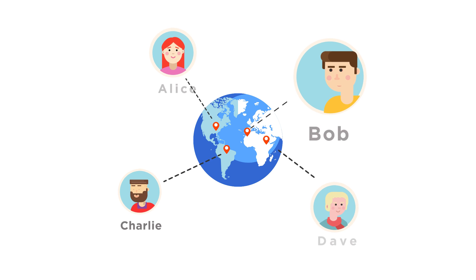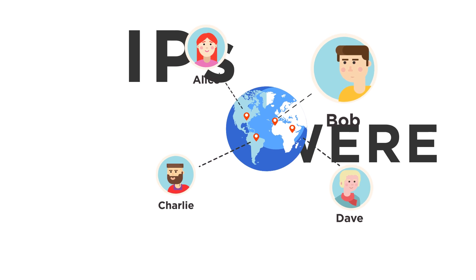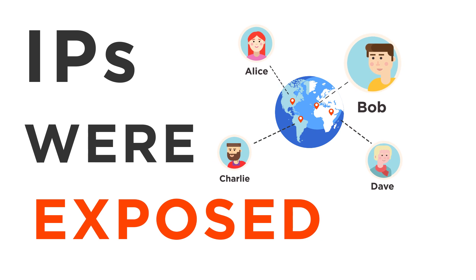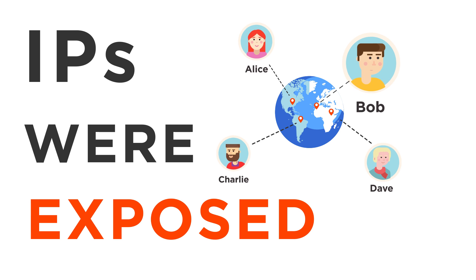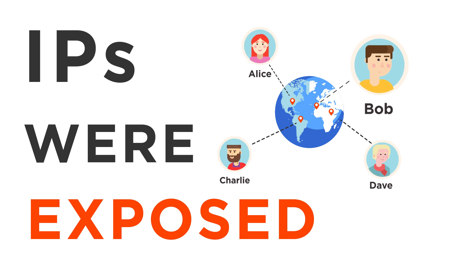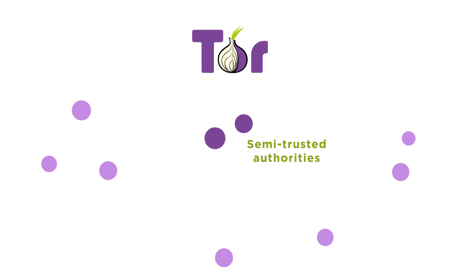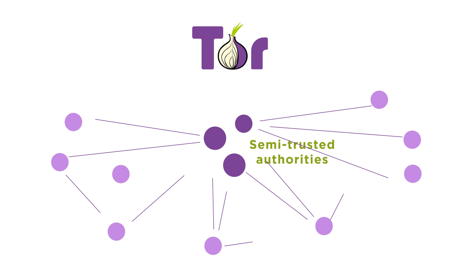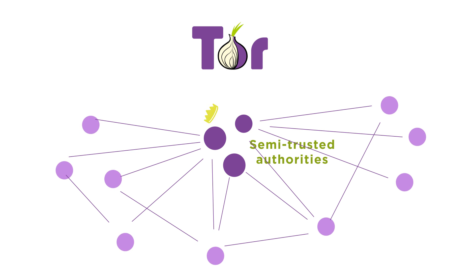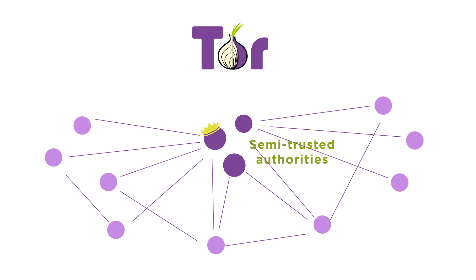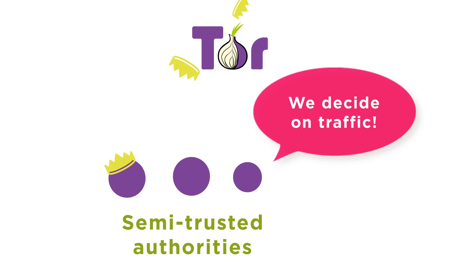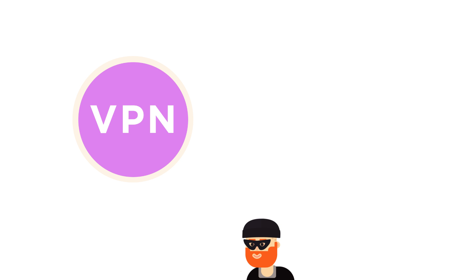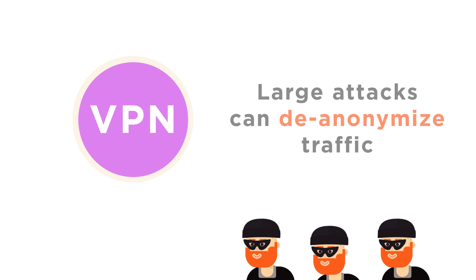Alice, Bob, Charlie, and Dave all have at least one thing in common: their IP addresses were exposed. Users could try to hide IP addresses with TOR or a VPN. However, both of these strategies have serious weaknesses. The TOR network has semi-trusted directory authorities, which give a handful of TOR node operators overreaching influence into network consensus. Network consensus ultimately determines who is allowed to relay traffic on the TOR network based on the views of the authorities. Furthermore, correlation attacks are easily possible with trusted VPNs, making it easy for large attackers to de-anonymize a user's traffic.